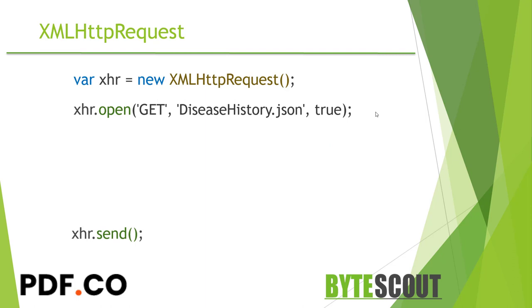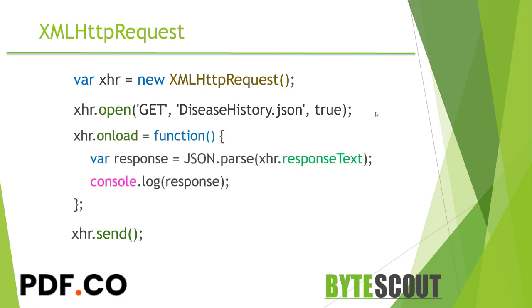Next, we use the send method, which actually executes the entire process. In between, we create a function that waits for the data to load successfully. Once we get the data, we convert it from a string to an object and put that response object into a custom variable. Then, just to see if everything works, I will preview the JSON object in the JavaScript console.